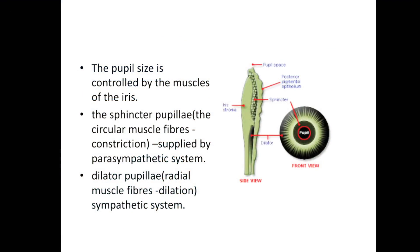The size of the pupil is determined by the action of the muscles of the iris. There are two sets of muscles: circular muscle fibers and radial muscle fibers. The circular muscle fibers, also known as the sphincter pupillary muscle, are responsible for constriction of the pupil and are supplied by the parasympathetic pathway. The radial muscle fibers, the dilator pupillary muscle, are responsible for dilation and are supplied by the sympathetic system.